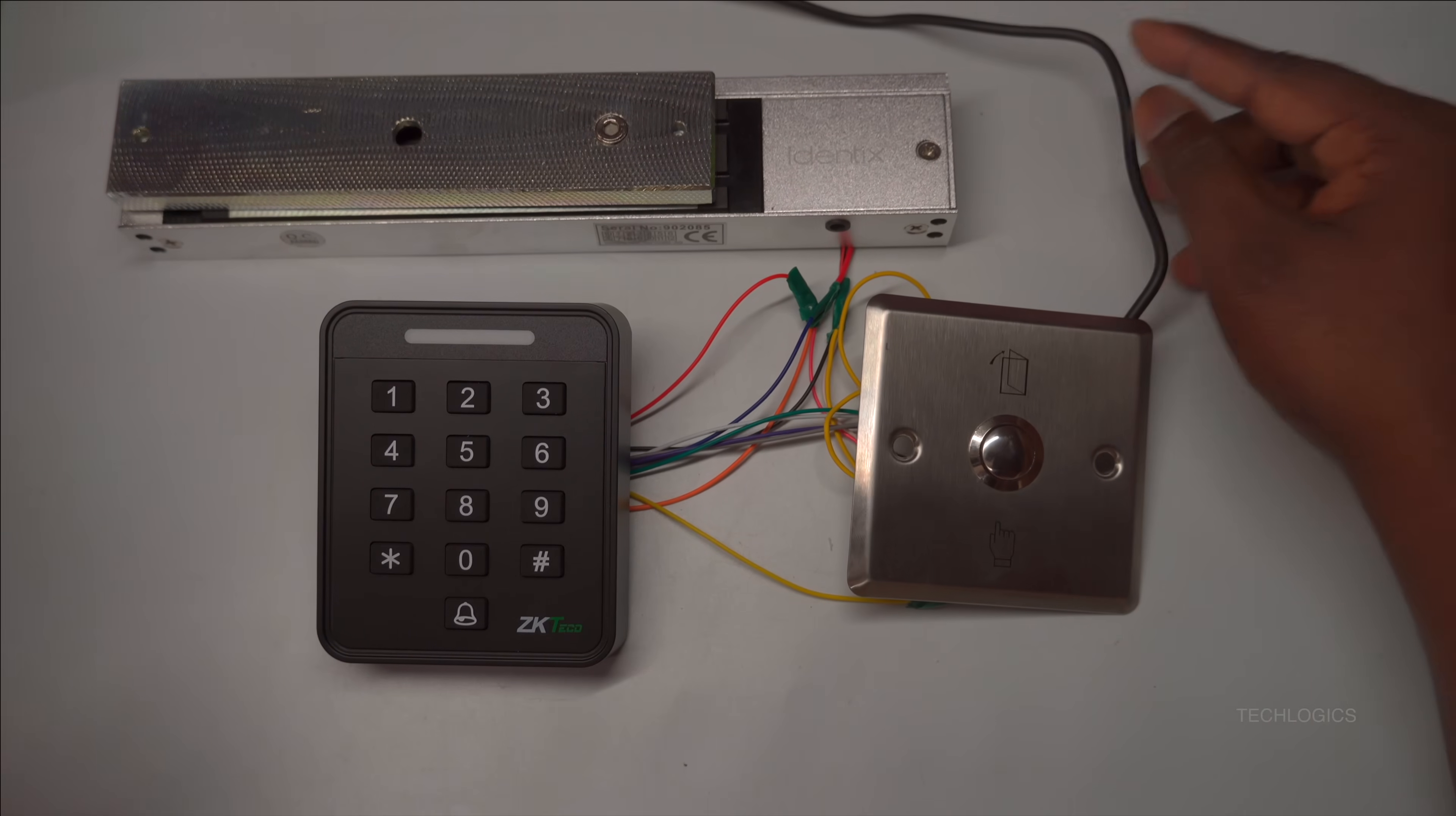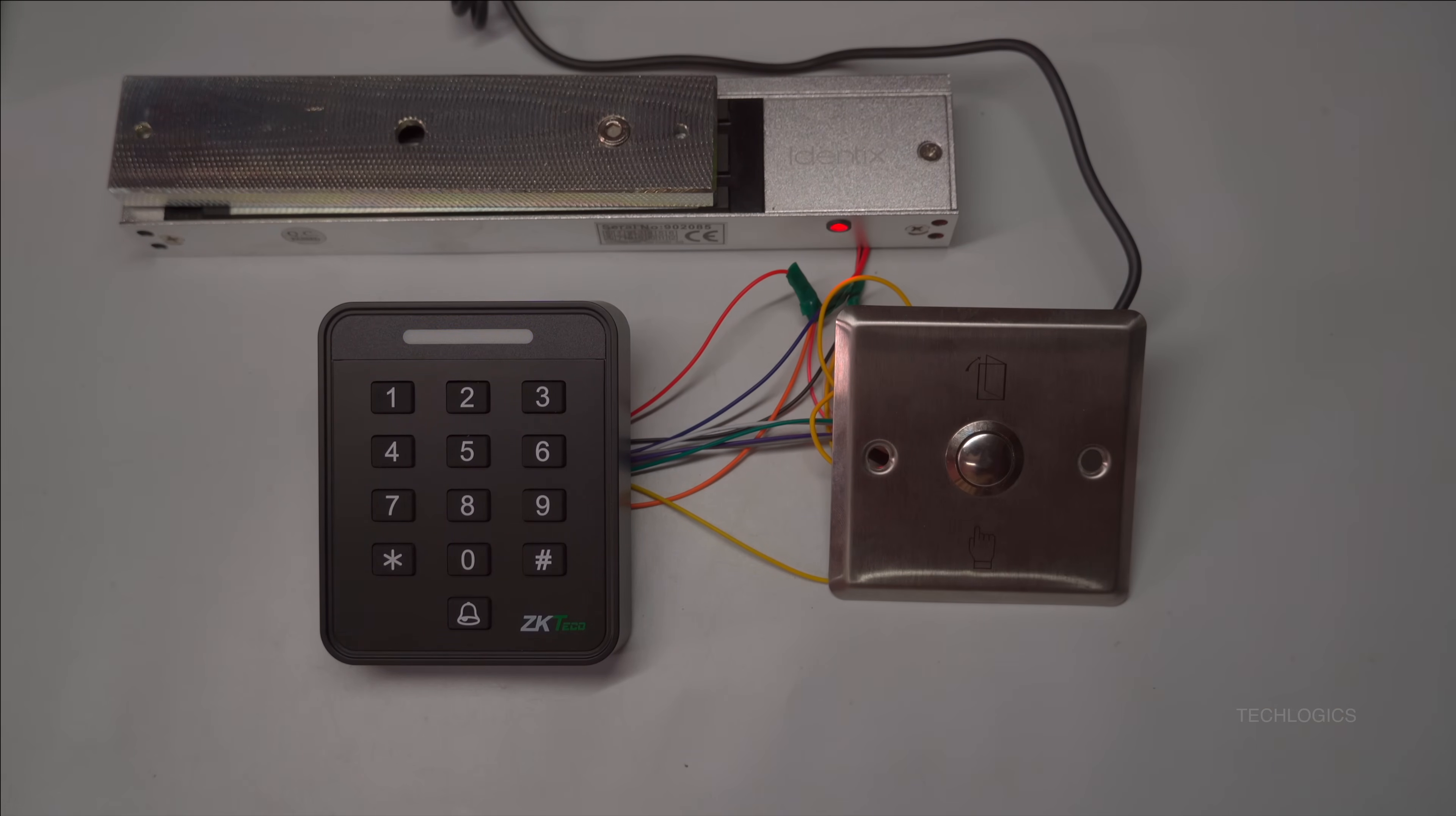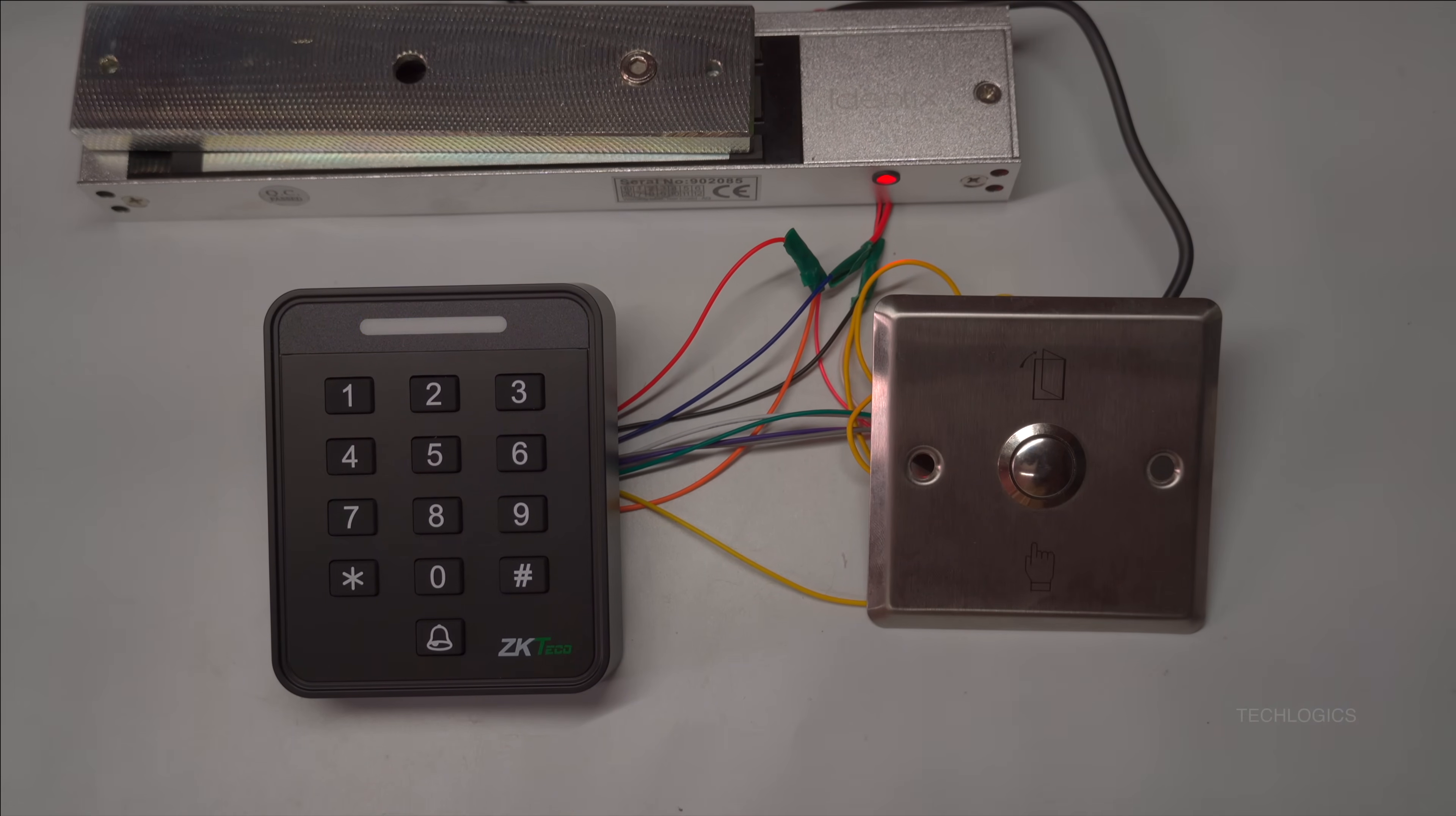Next, test the electromagnetic lock and exit switch to ensure they operate properly. Press the exit switch; the lock should demagnetize and release, allowing you to exit easily. Then present an RFID card to the access controller; it should recognize the card and unlock the electromagnetic lock accordingly. These tests confirm that both the hardware and the access control logic are functioning correctly. Proper testing helps identify any wiring or configuration issues early on, saving you time and ensuring security.